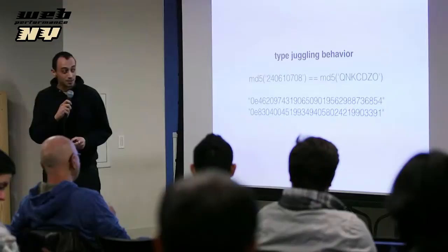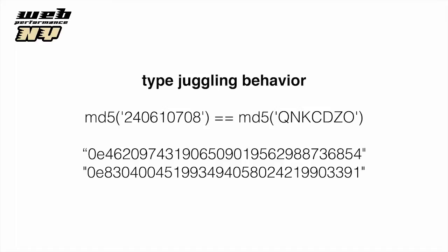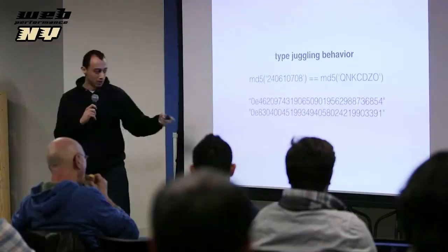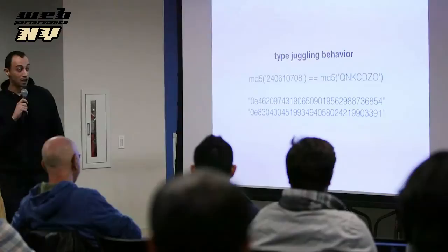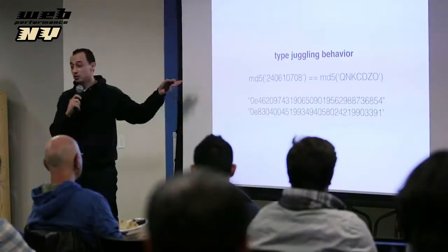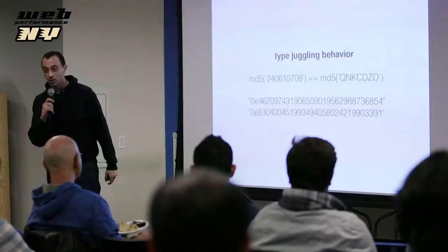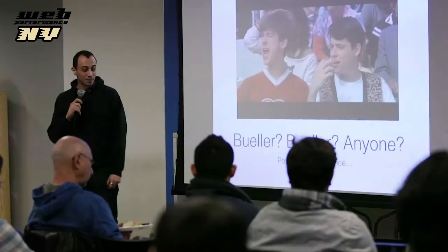Another quirk that comes up: if you take the MD5 sum of two strings, they can happen to equal each other. When you compare them you get true. What happens is these strings begin with zero followed by the letter E, so PHP does a typecast — they both become the integer zero, and you get a comparison of zero equals zero. Again, this is not the reason why PHP sucks.